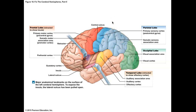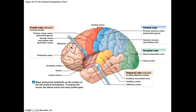The frontal lobe can be separated into regions. The prefrontal cortex, the beige-colored region above your eyes, is where neurobiologists believe our higher intellectual functions reside — our logic, rationality, personality, planning, and reasoning skills.